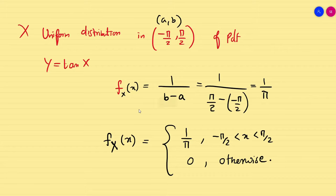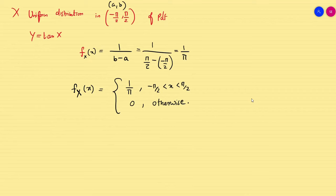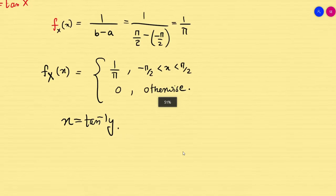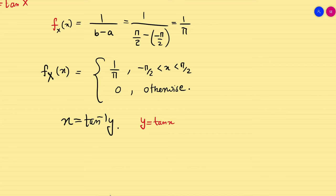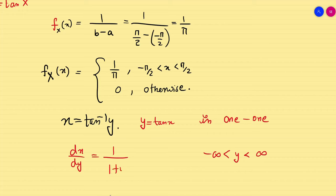From y = tan(x), we get x = tan⁻¹(y). The function is one-to-one and monotonic. Differentiating, dx/dy = 1/(1 + y²). When x = -π/2, y → -∞; when x = π/2, y → +∞. So y ranges from -∞ to +∞.